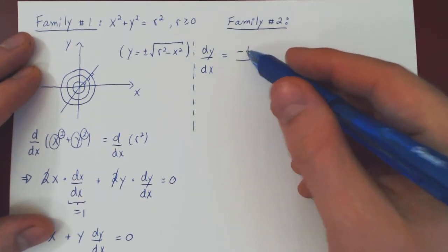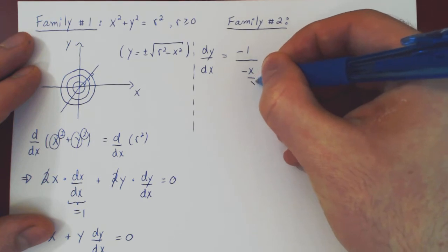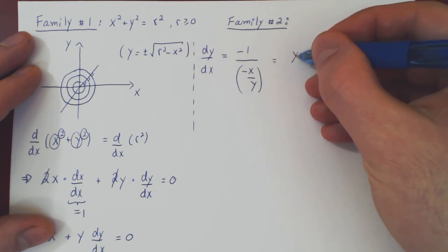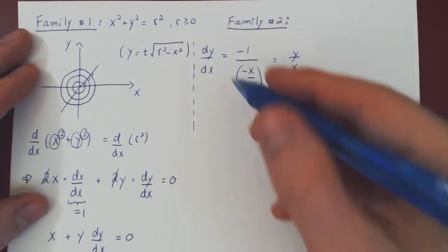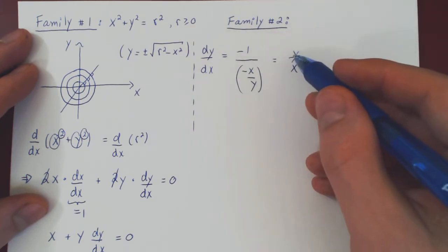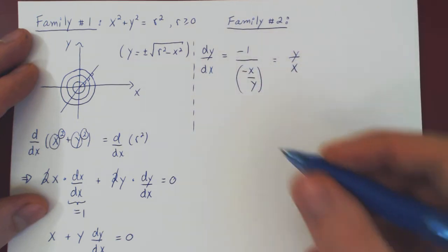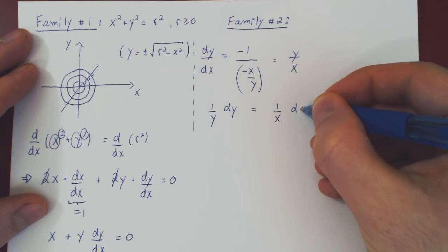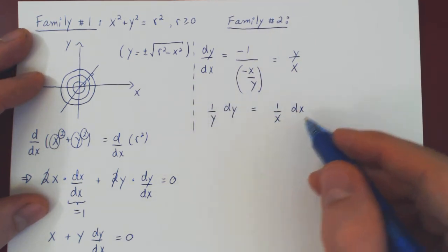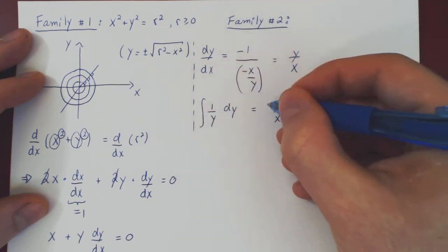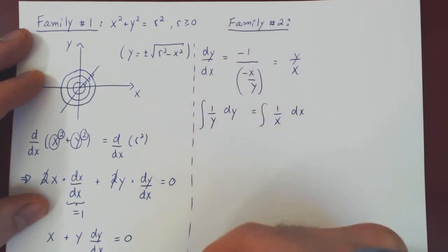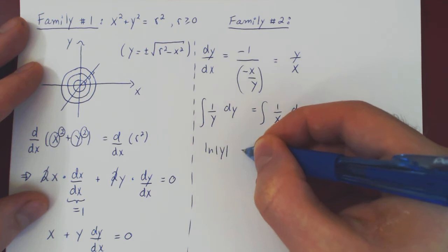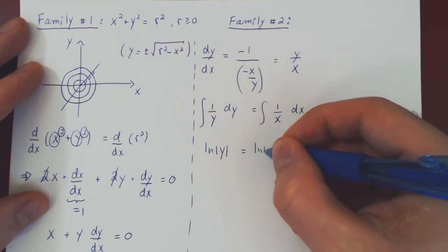So we have for the second family negative 1 over negative x over y. If you simplify, the negatives cancel and you're left with y over x. Once again, we have a separable differential equation. Divide by y, multiply by dx, and you're left with 1 over y dy equals 1 over x dx. Once again, a differential in y equals a differential in x. So we can integrate both sides.